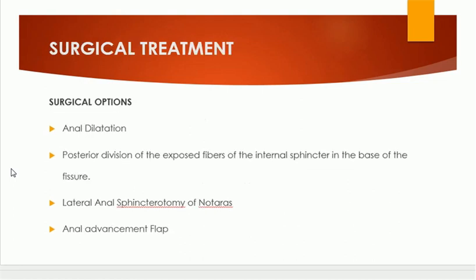For surgical options in the treatment of anal fissure, historically under regional or general anesthesia, different surgical options are available: anal dilatation, sphincterotomy in the base of the fissure, lateral anal sphincterotomy, and anal advancement flap — another surgical procedure done for chronic anal fissure.